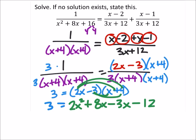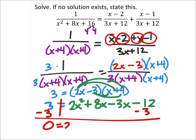And, if we combine like terms and also subtract 3 from both sides, then we get 0 equals 2x squared plus 5x minus 15.